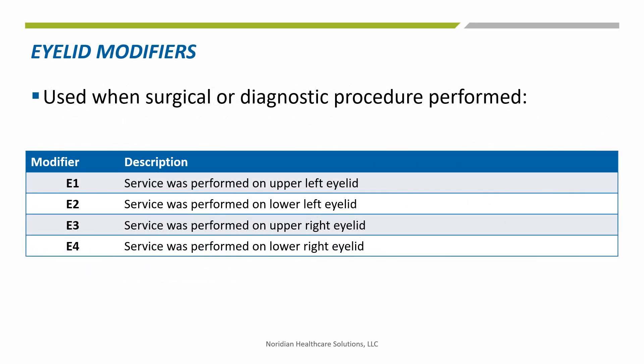This slide shows the anatomical eyelid modifiers. They are used on a surgical or diagnostic code to represent the portion of the eyelid that the service was performed on. E1 is used for the upper left eyelid, E2 for lower left eyelid, E3 for upper right eyelid, and E4 for lower right eyelid. It is inappropriate to use these modifiers on a non-surgical or non-diagnostic code or when reporting on any other body part than the one in the definition.